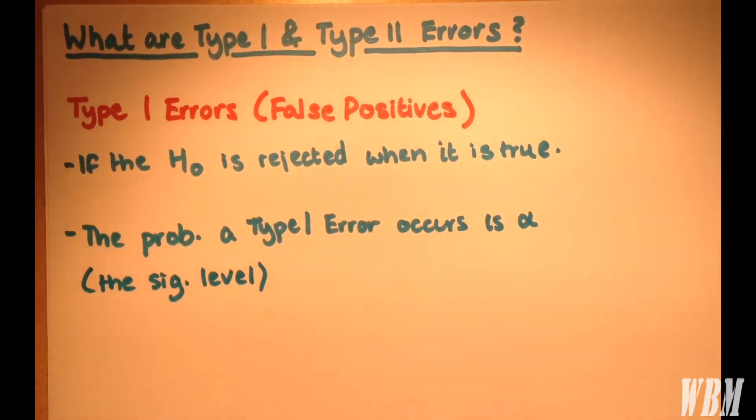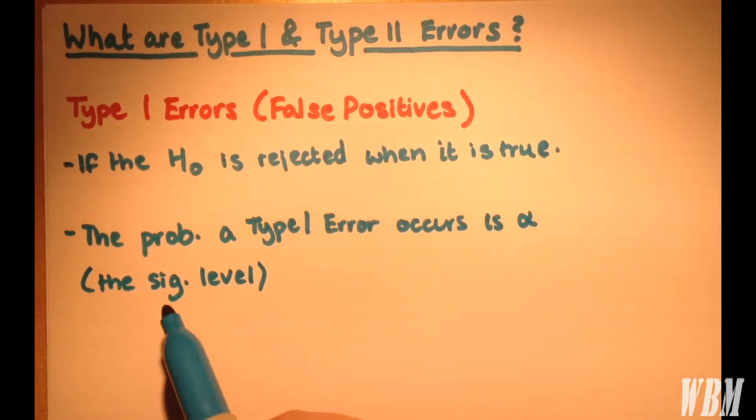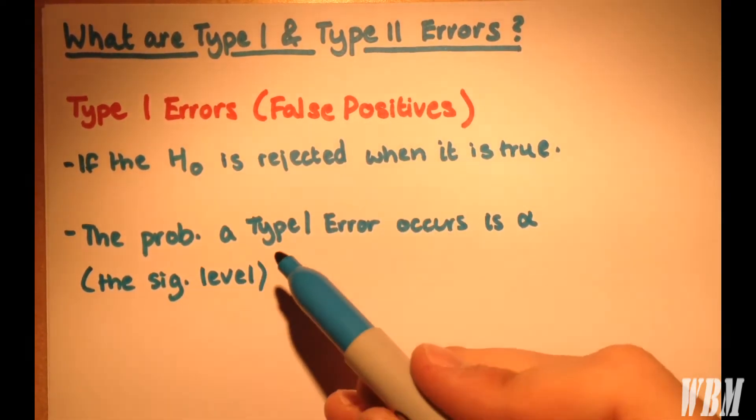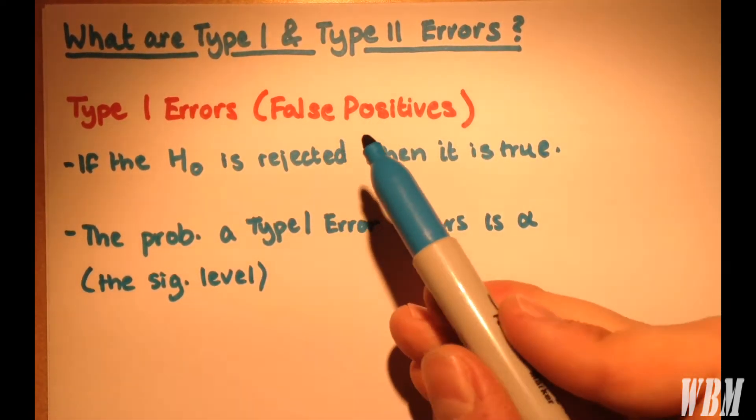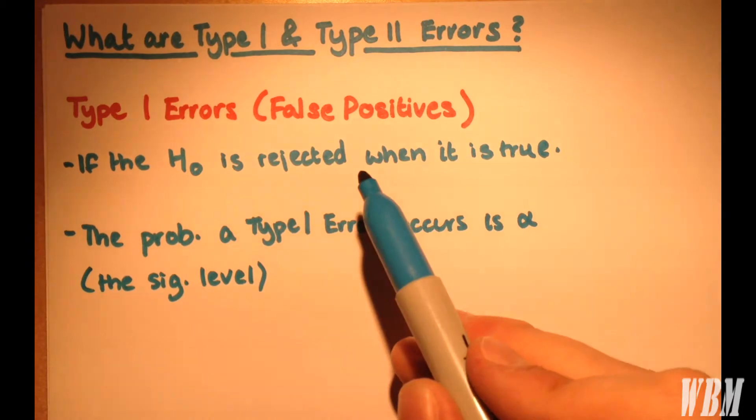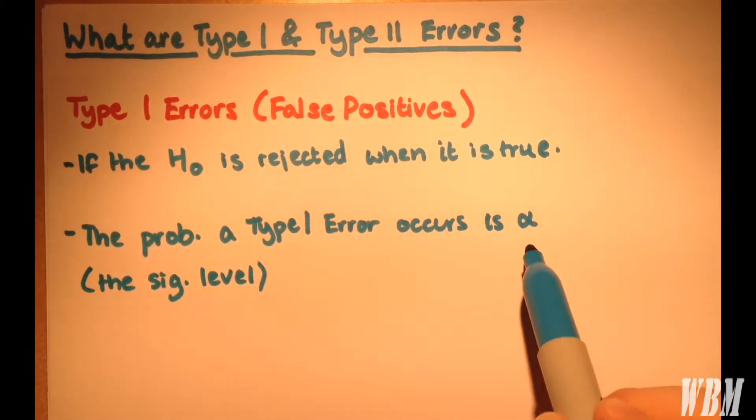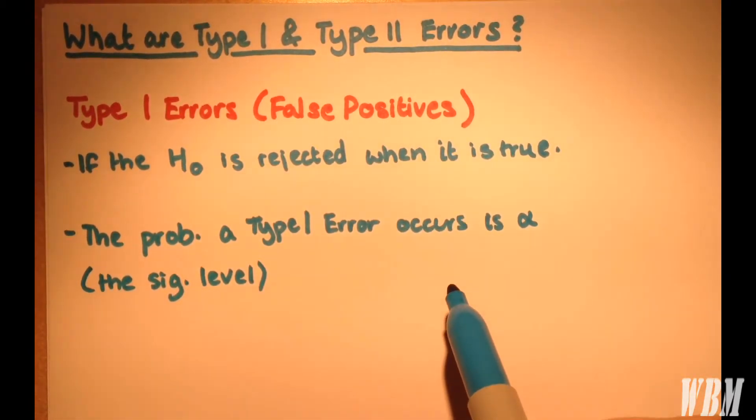Of course, the person conducting the test chooses the value of the significance level, so you get to choose how precise you are by increasing or decreasing the amount of Type 1 errors that can possibly occur by affecting the significance level.